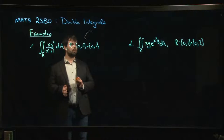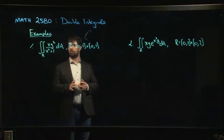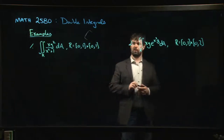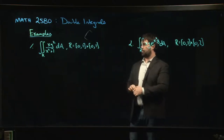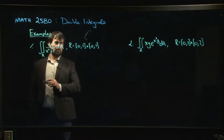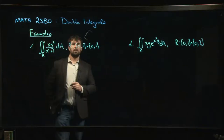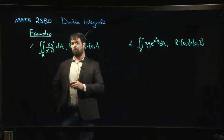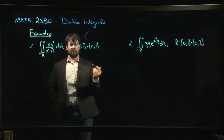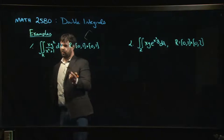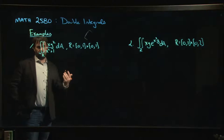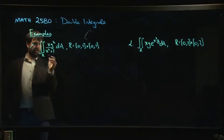All right, so we're going to do a couple quick examples with integrals over rectangles before we move on to figure out how to do double integrals over more general regions. We're going to start with this example over here on the left. So we have y squared over x squared plus 1. We can choose whether we want to do this as an iterated integral where we do x first and then y, or y first and then x. In this case, it doesn't really matter which order you choose.